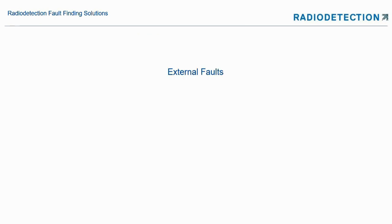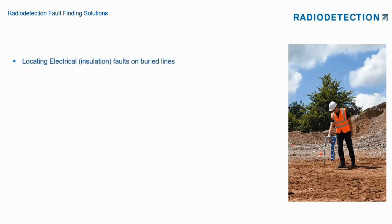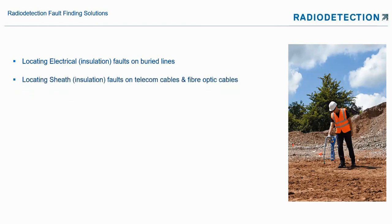Now, external faults. We look at insulation faults on buried lines — these would be sheath faults on telecom cables, and we can even find faults on fiber optic cables. As long as there's a metal sheath, we can find the cable. We can also locate and find coating defects on pipes.